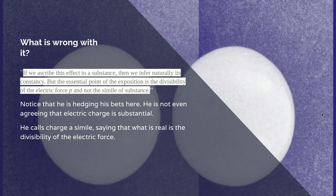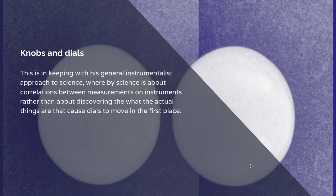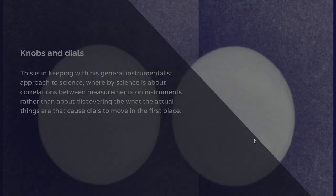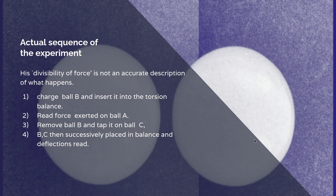He says all that's real is the divisibility of the electric force. The notion of charge is just a simile we use to understand the division of electric force. Now does that hold up? This is in keeping with his general view of what science is, which is that science is about correlations between instruments, correlations between measurements of instruments, rather than about discovering what actually causes the dials to move in the first place. He's only concerned with explaining the psychological experience, uncovering the regularities of psychological experiences, not uncovering the causes of those regularities.